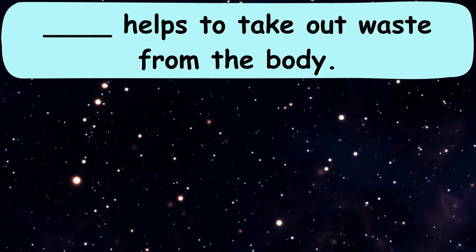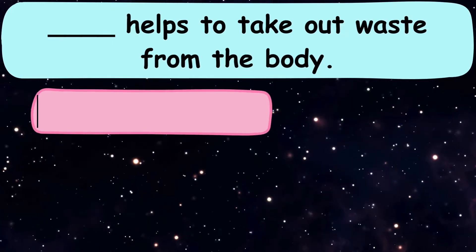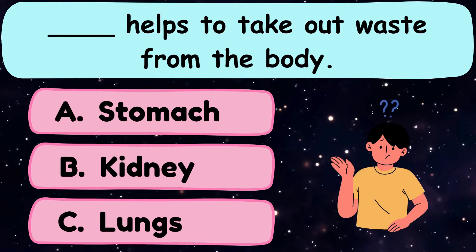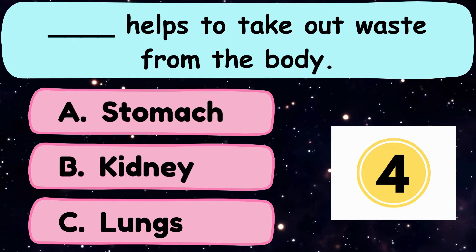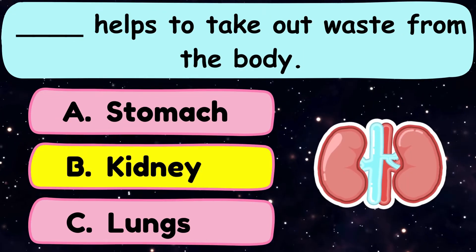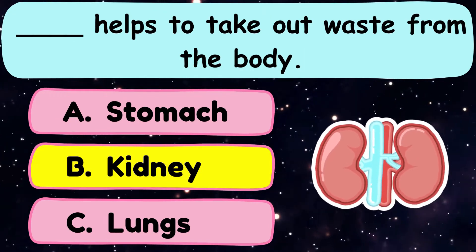Question number 12. Dash helps to take out waste from the body. A. Stomach, B. Kidney, or C. Lungs? And the correct answer is option B. Kidney.